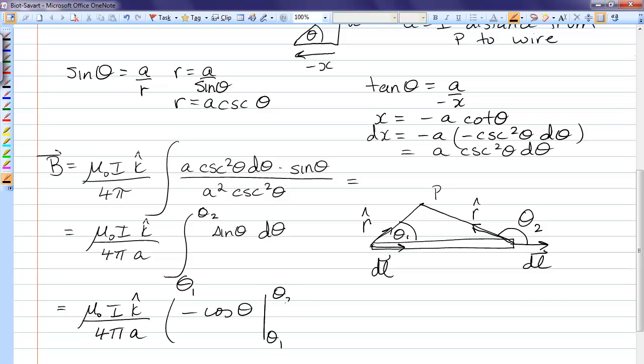Evaluated from theta one to theta two. I'm just going to reverse those because of that negative sign. And our final answer becomes μ₀I k-hat over 4πa times cosine of theta one minus cosine of theta two.